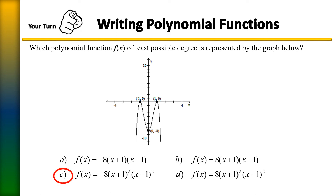Option a cannot be correct because a degree-2 polynomial with a negative leading coefficient would be a parabola facing downward. And there you have it — using everything we've learned to identify the equation of a polynomial function.